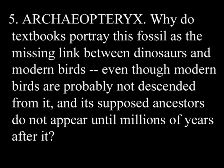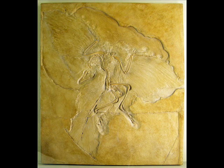Number 5: Archaeopteryx. Why do textbooks portray this fossil as the missing link between dinosaurs and modern birds, even though modern birds are probably not descended from it, and its supposed ancestors do not appear until millions of years after it? Yes, that controversial creature called the Archaeopteryx — a dinosaur with feathers, a bird with teeth and a bony tail. Some like to say that it's fully a bird and therefore not a transitional species, but it's a very clear transition.